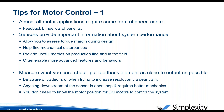When adding sensors for feedback control, always measure what you care about — put the feedback element as close to the output as possible. Often people put an encoder on a motor shaft for resolution gain through the gear train, but that makes everything downstream of the sensor open loop, requiring better mechanics for precise downstream motion. Also note: you don't need to know the motor position for DC motors — you're just trying to control the load, and any feedback loop will control the overall system.